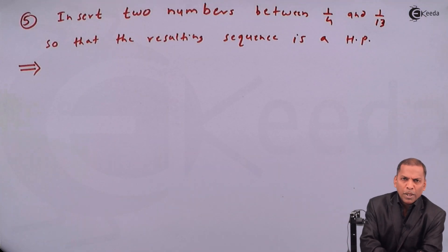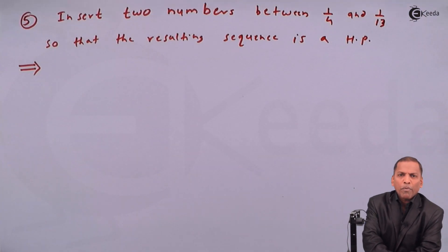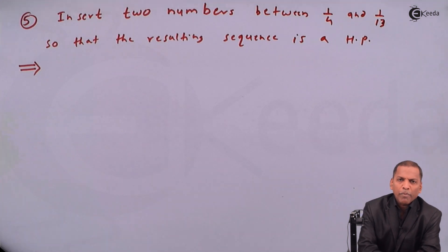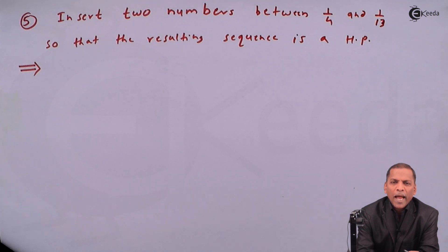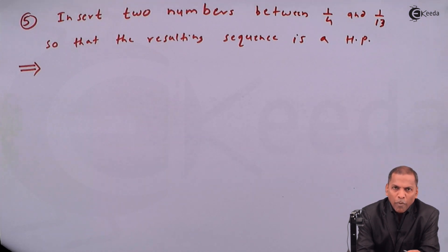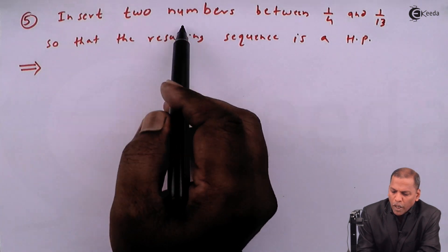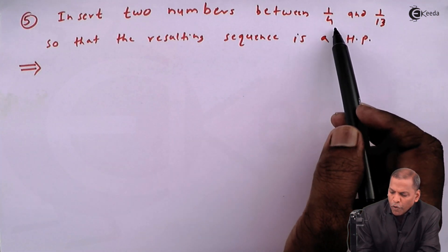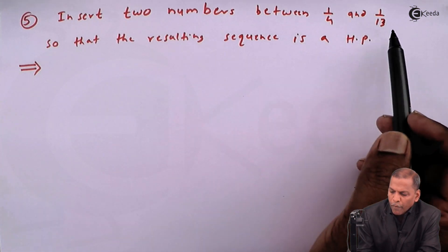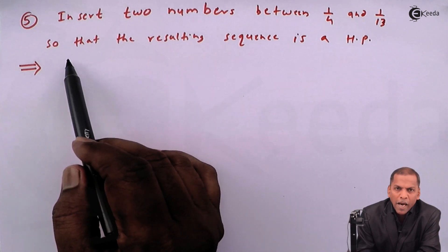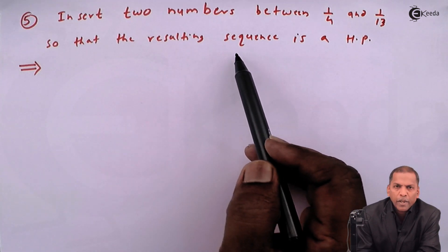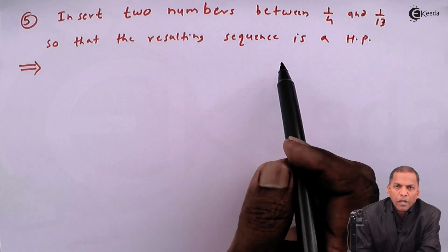Hello friends. Now we see problem number five, which is based on arithmetic mean, geometric mean, and harmonic mean of the chapter Sequence and Series. The problem is: insert two numbers between 1/4 and 1/30 so that the resulting sequence is in HP.